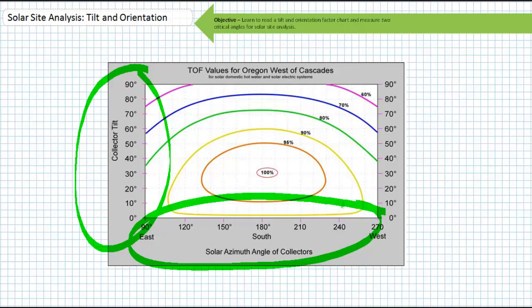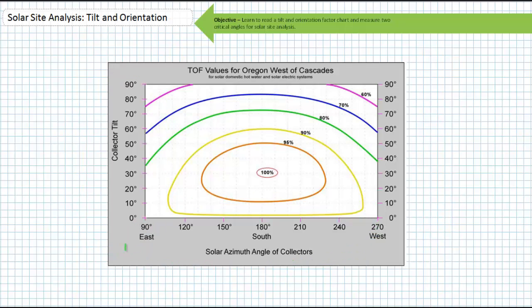Once you've determined the angle for your tilt and the angle for your orientation, you simply find the intersection of the two on the TOF chart and take the value of that particular ring you find yourself in. For example, using this TOF chart for Oregon west of the Cascades, I realize a tilt value of 30 degrees and an orientation of 180 degrees or true south gives me a TOF of 100%. Meaning 100% of the incoming peak sun hours for this configuration are passed to the next subsystem.